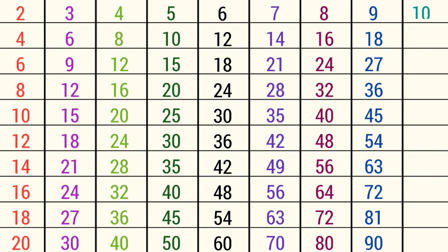10 ones are 10, 10 twos are 20, 10 threes are 30, 10 fours are 40, 10 fives are 50, 10 sixes are 60.